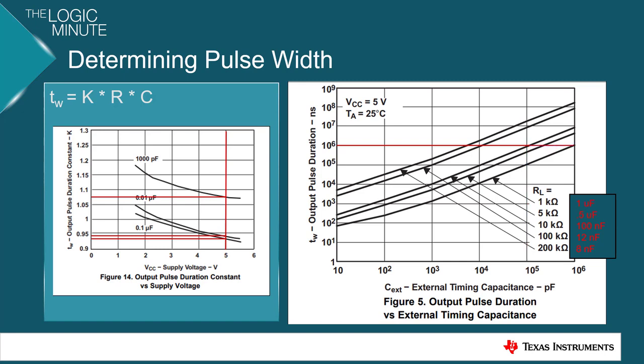At 5 kilo ohms, we'd need a 0.5 microfarad capacitor. And at 1 kilo ohm, we need a 1 microfarad capacitor in order to achieve this pulse width of one millisecond.